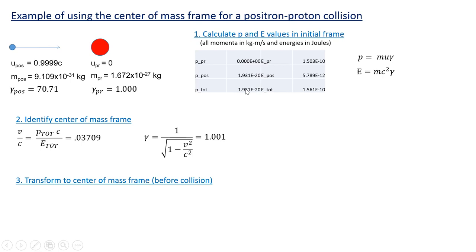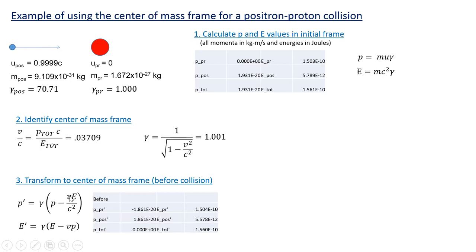The third step is to transform the momentum and energy values from the initial frame to the center of mass frame before the collision, using the Lorentz transformations with v equal to the center of mass velocity. Applying these to the initial frame values, we find the proton has negative momentum in the CoM frame — as expected — while the positron has positive momentum. When added together, the total momentum is zero, confirming we're in the center of mass frame.